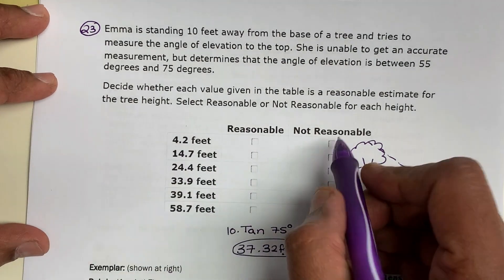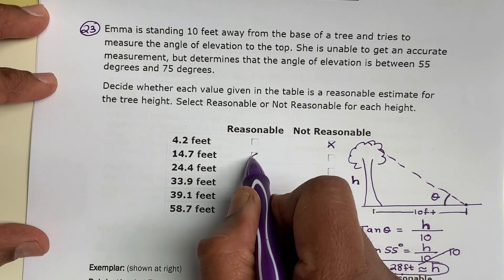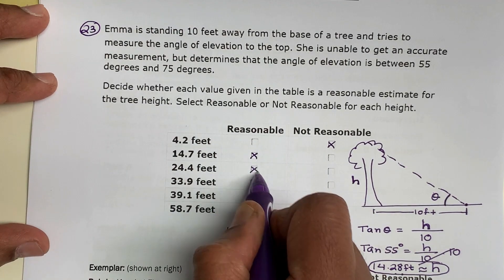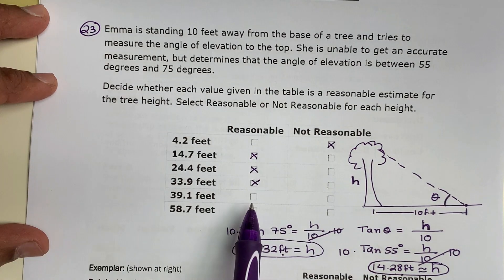This first one is not reasonable. This is reasonable. This is reasonable. This is reasonable. The highest was 37.32.